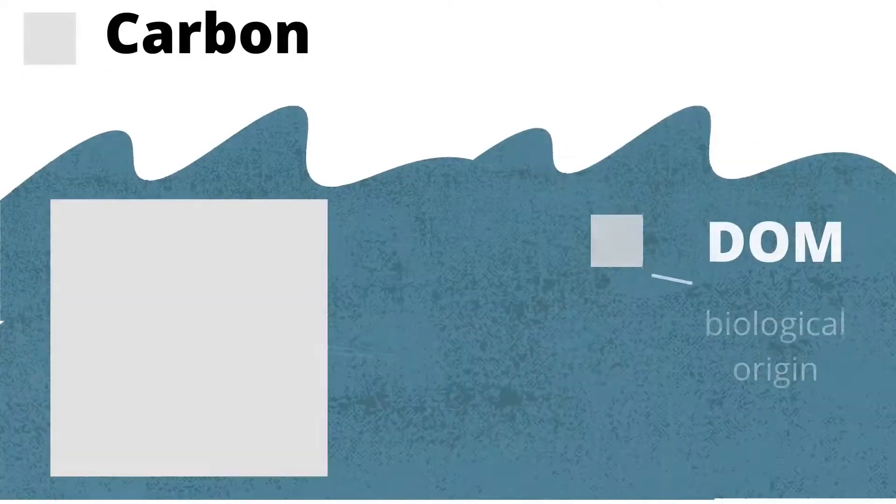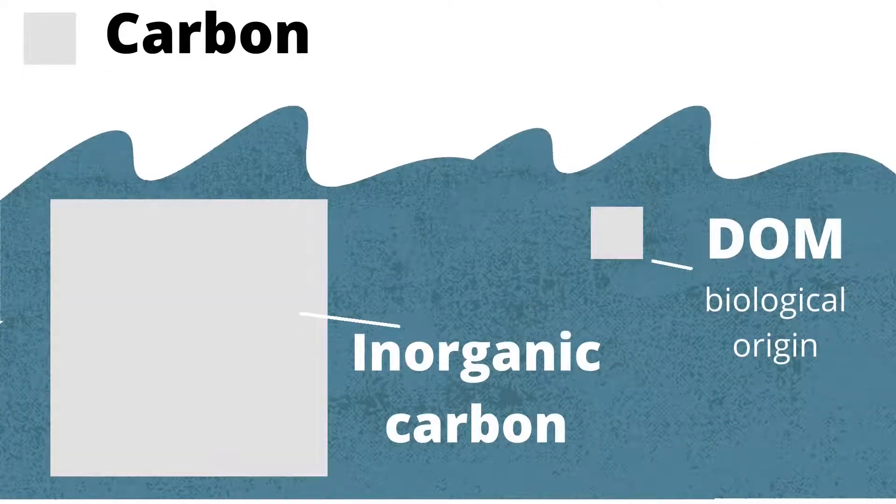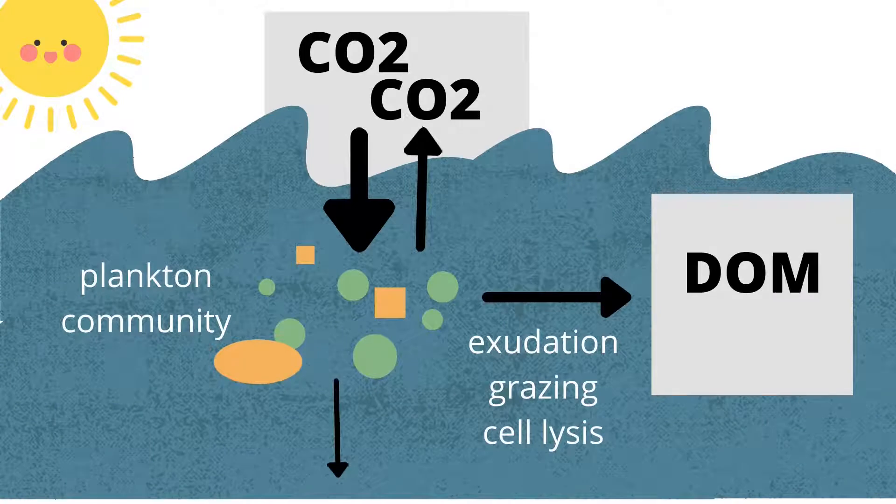The oceans contain carbon mostly in its inorganic form, while DOM is of biological origin. CO2 from the atmosphere is fixed by primary producers.